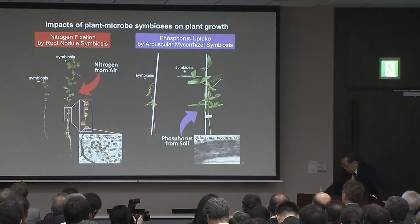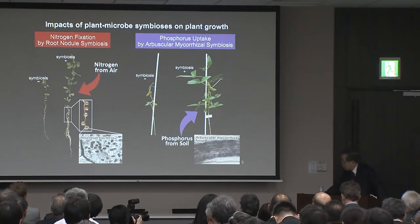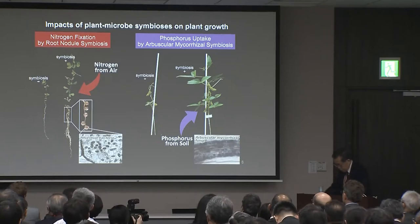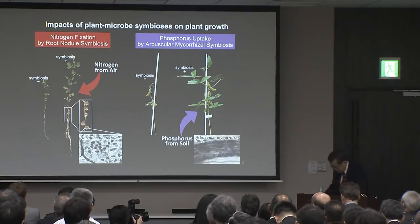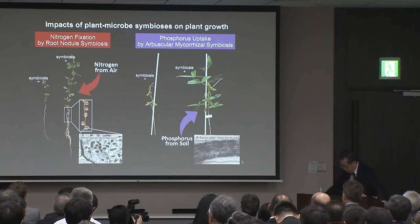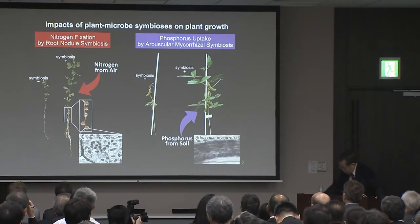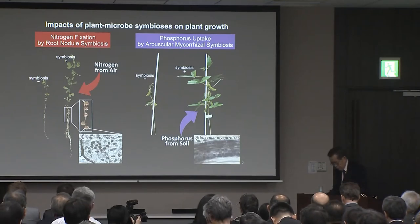Plants need nitrogen and phosphorus for their growth. Availability of these nutrients constrains the productivity of agroecosystems. To overcome this constraint, plants acquire these nutrients through symbiotic interactions with soil microbes. A legume can acquire atmospheric nitrogen via endosymbiosis with nitrogen-fixing rhizobia. The majority of ground plants accommodate arbuscular mycorrhizal fungi, which efficiently uptake phosphorus from soil. You can see a great impact on growth by inoculation of rhizobia and arbuscular mycorrhizal fungi.